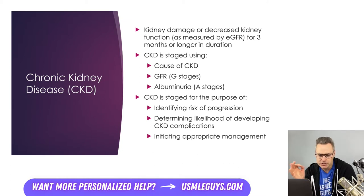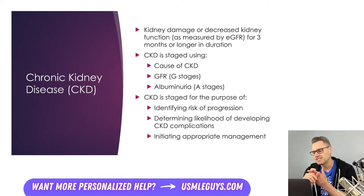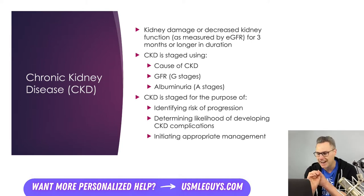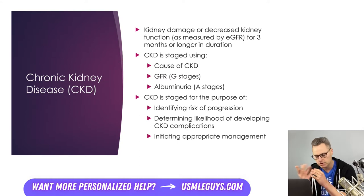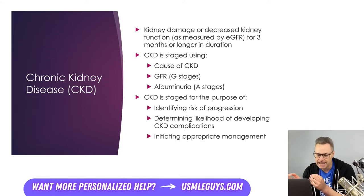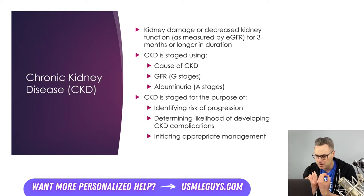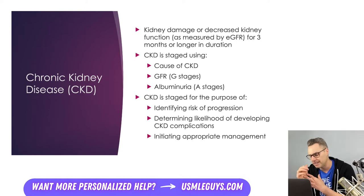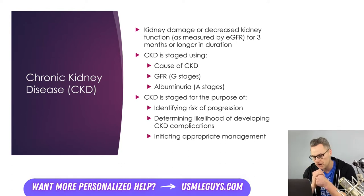To stage CKD, you're going to consider the cause, the G stage as determined by GFR, as well as the A stage as determined by the albumin excretion rate. CKD is staged in this way because it allows us to better identify patients who are at risk for progression and complications, as well as for determining which treatment plan would be most appropriate.